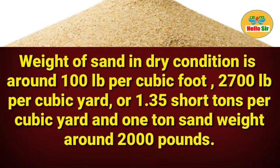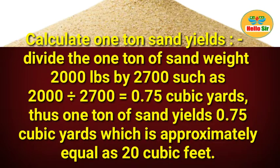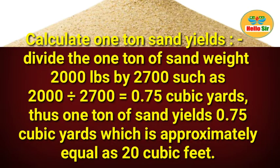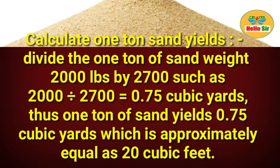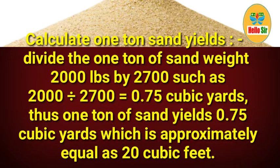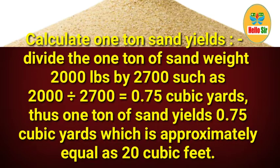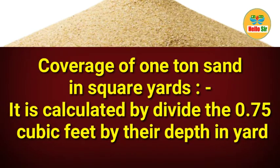One ton of sand weighs around 2,000 pounds. To calculate one ton of sand in cubic yards, divide 2,000 pounds by 2,700 — that is 2,000 divided by 2,700 — which equals 0.75 cubic yards. Thus, one ton of sand yields 0.75 cubic yards, approximately equal to 20 cubic feet.